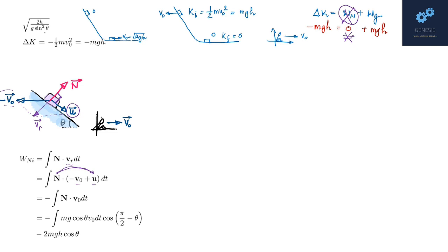So this dot product with u vanishes, and what you're left with is N dot v0 into dt with a minus sign outside. Now you need the dot product between N vector and v0 vector. If this angle is θ, this will be π/2 minus θ. The value of the normal force is mg cos θ into v0 dt into cos of the angle between them, and this answer comes out as minus 2mgh cos θ.